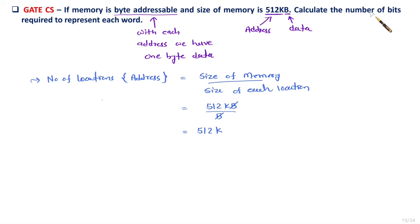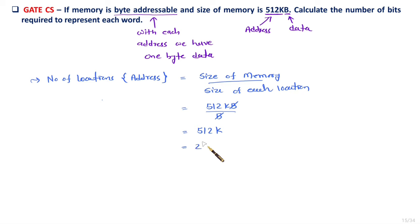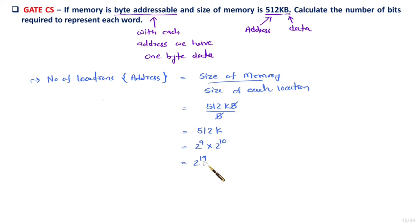The question asks us to calculate number of bits required to represent each word. When you want to calculate number of bits, you have to identify the number of locations in the form of 2 to the power N. 512 means 2 to the power 9, and K means 2 to the power 10. So in total, 2 to the power 19 locations are there, which means 19 bits are required to represent each location.